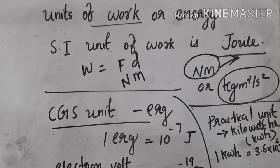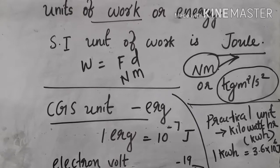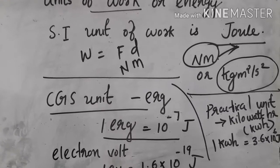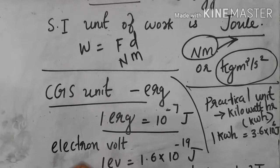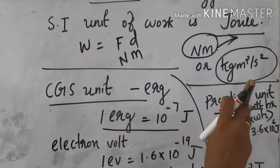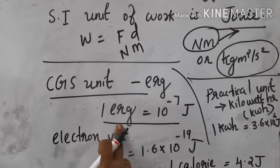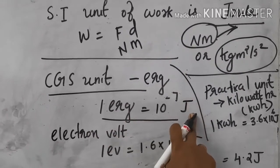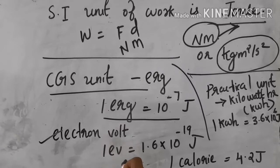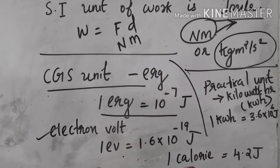The CGS unit of work is the erg. One erg equals 10 raised to minus 7 joules. Another unit of work and energy is the electron volt: 1 electron volt equals 1.6 times 10 raised to minus 19 joules.